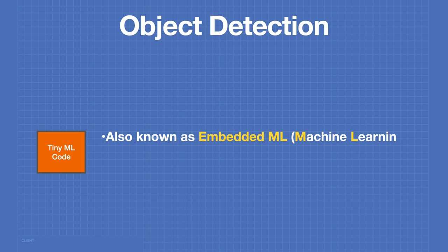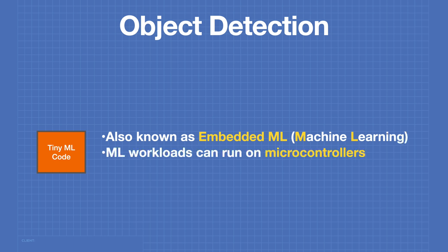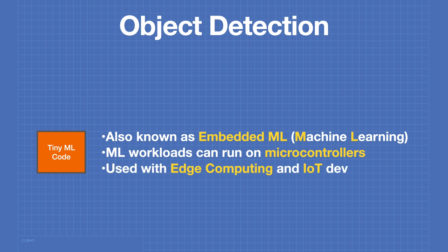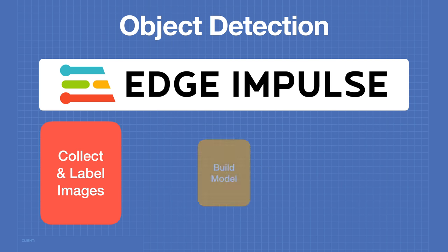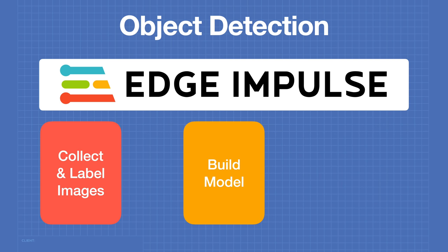TinyML, also known as embedded ML, allows you to run machine learning workloads on a microcontroller. This technique is used with edge computing in IoT devices. The method we're going to use today is a product called Edge Impulse. Edge Impulse will allow us to collect and label our images, build a model using a neural network, and deploy that model to an ESP32.